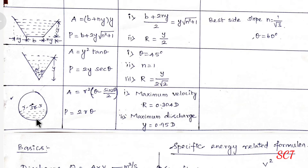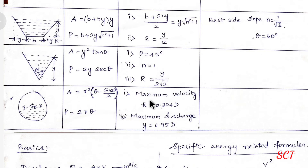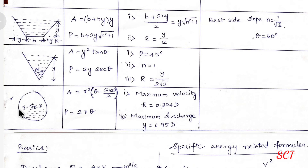Next, circular section. Area formula: R squared times (theta minus sin 2theta) divided by 2, at the 2-theta level. Perimeter P equal to 2R theta. Most economical conditions — maximum velocity condition: R equal to 0.304D. Maximum discharge condition: y equal to 0.95D. These conditions are used when solving problems.